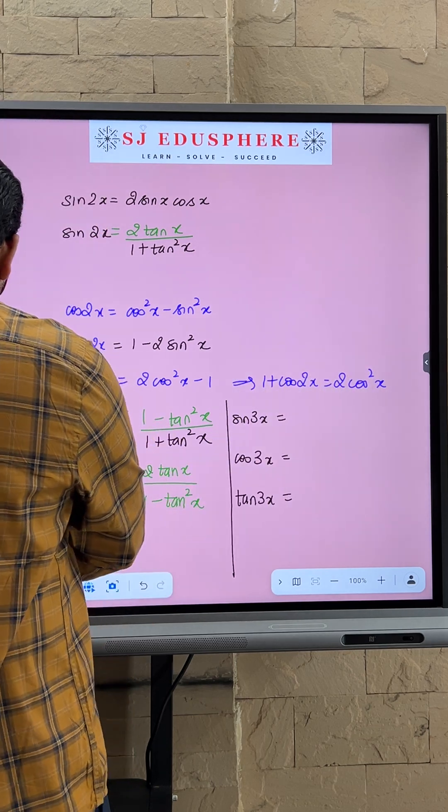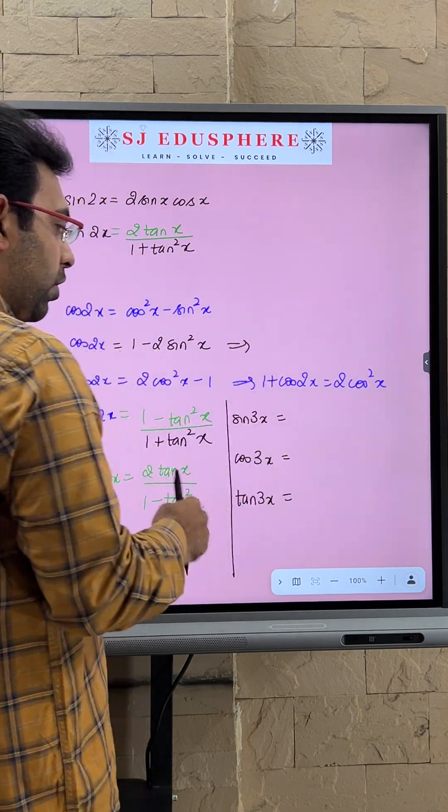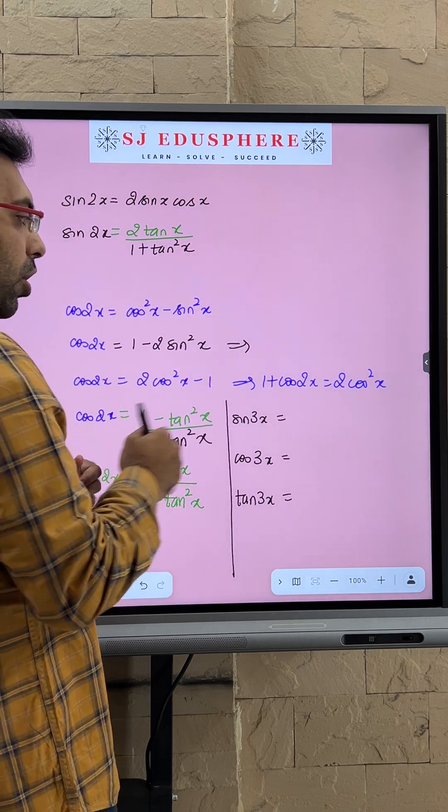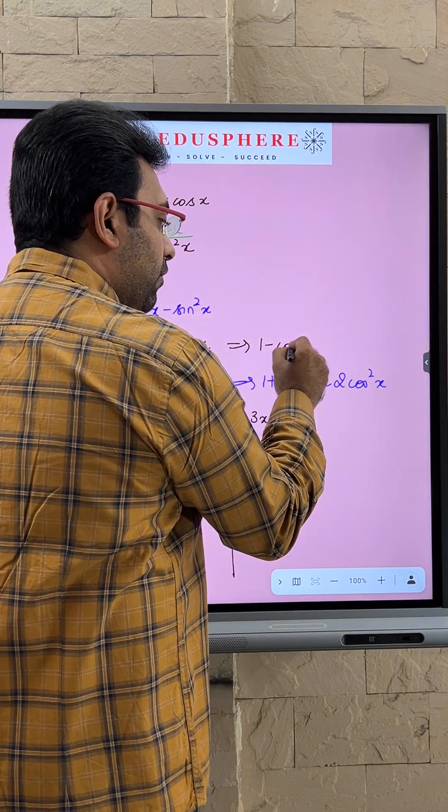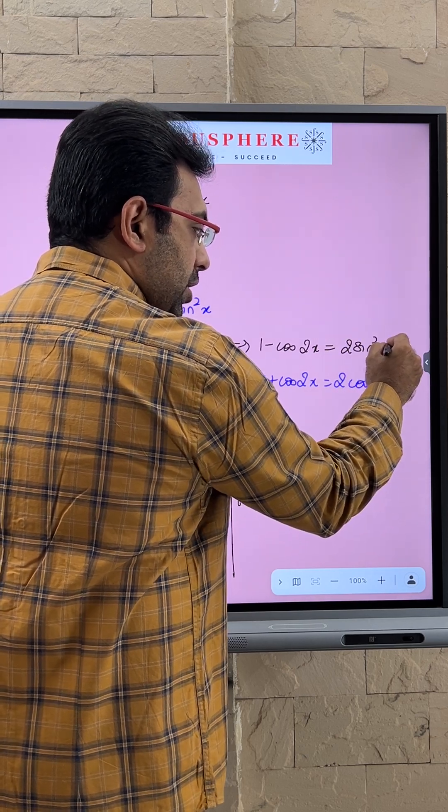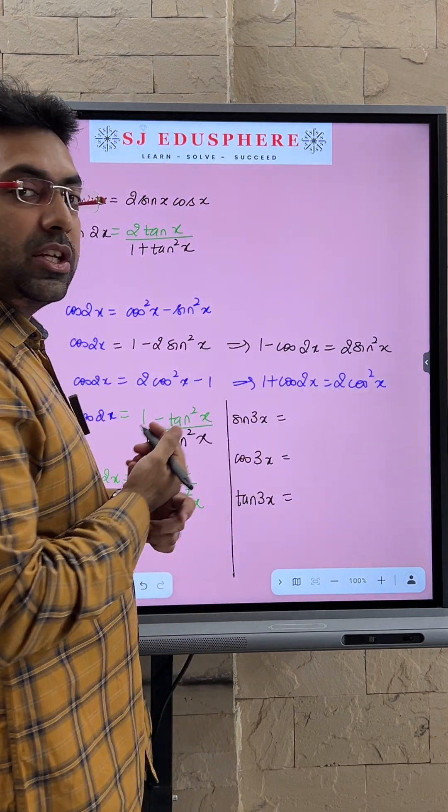Similarly, in this formula, if I transfer the sine square over here and bring the cos over here, I have 1 minus cos 2x equals 2 sine square x. So when we give it a minus, it changes to sine.